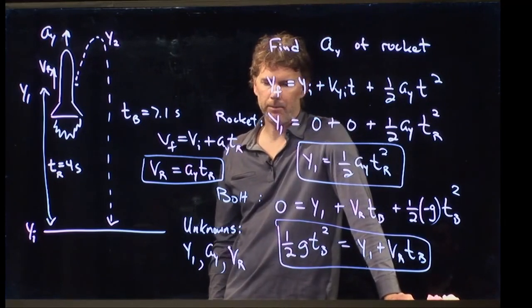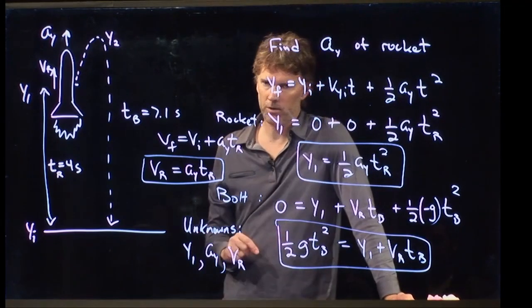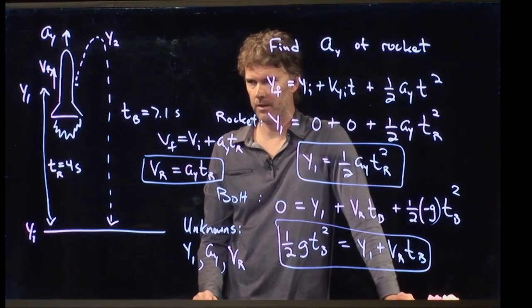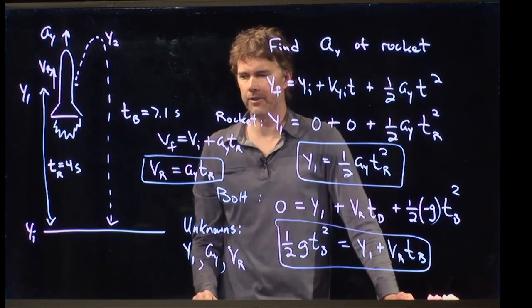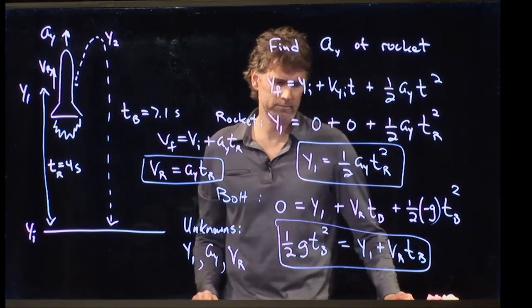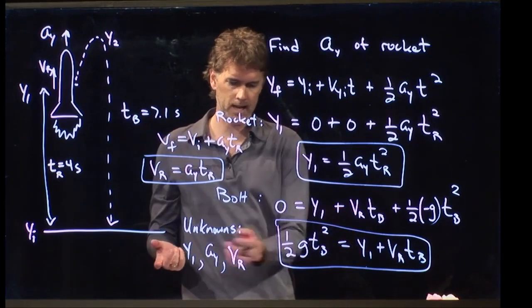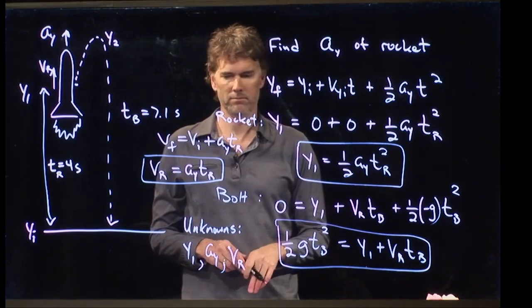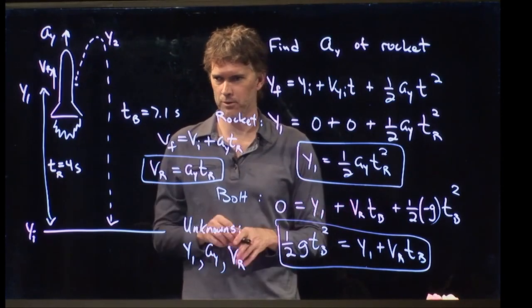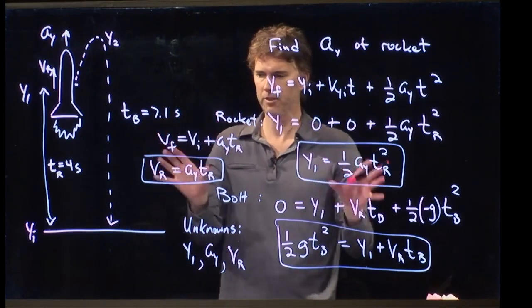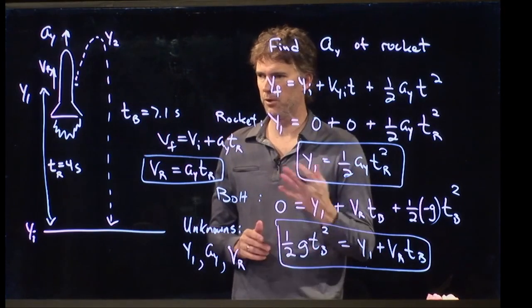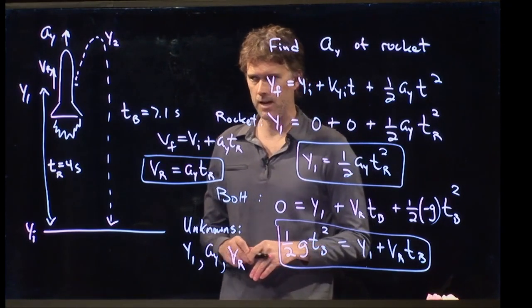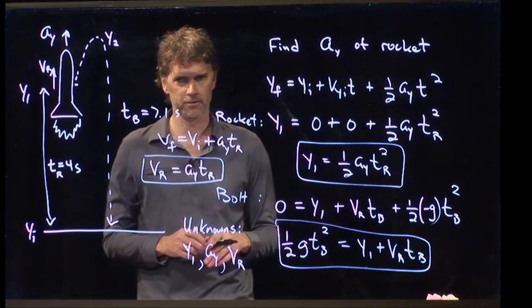That is the speed of the rocket right there. And so now look what happens. We've got one, two, three unknowns. We have one, two, three equations. And so now it is just a matter of solving these together to get all these quantities that we want. And in particular we want a y. So I'm not going to bother you with all the mathematical details at this point. This is the underlying physics. And at that point it's just doing some math to solve for those quantities. So hopefully that's clear. If not, come see me in office hours. Cheers.